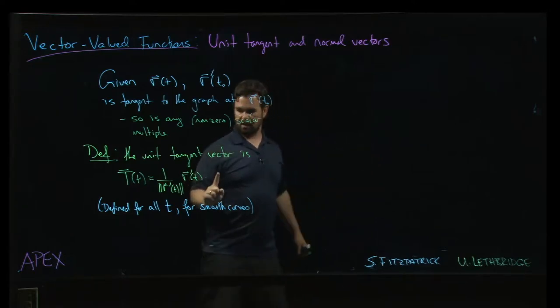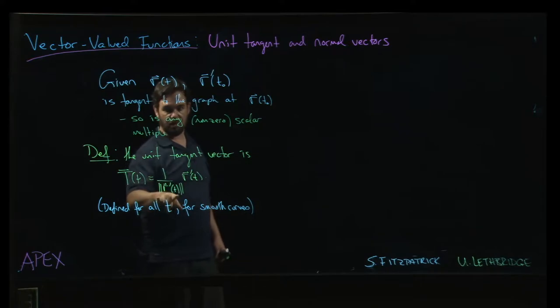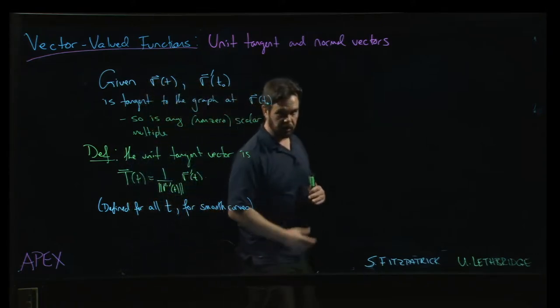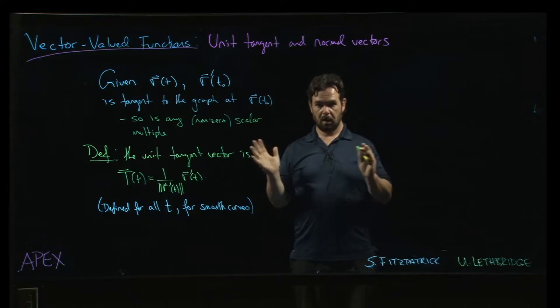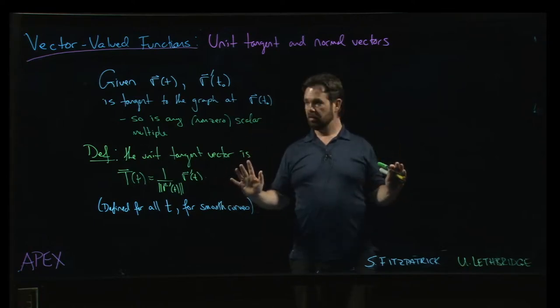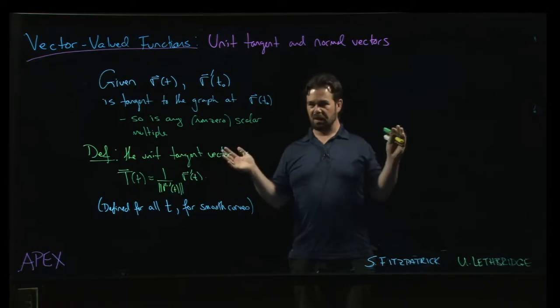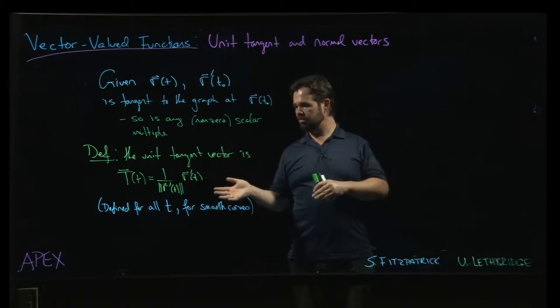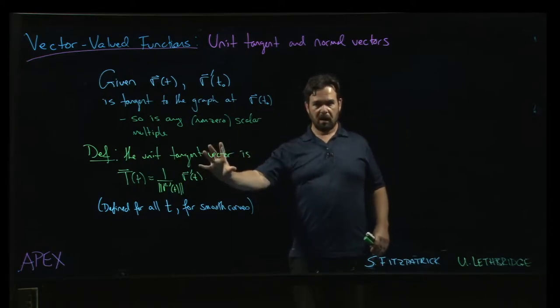And so that's good because to form the unit tangent vector you want to divide by the magnitude, we always have to worry about dividing by zero. But if we're on a smooth curve, we don't have to worry about that r prime being zero, so we can divide by the magnitude and all is well. So that's the unit tangent. It's a pretty simple concept. We just take the regular tangent vector, divide by the magnitude.